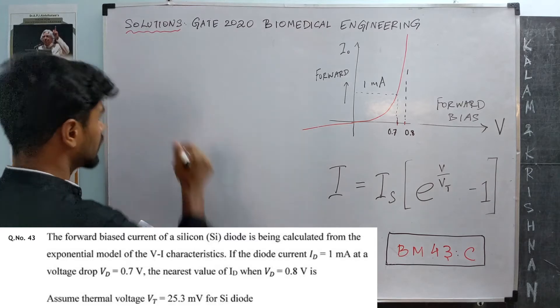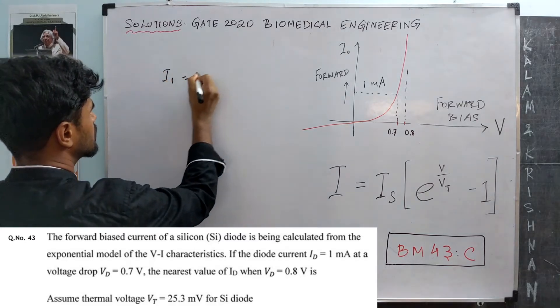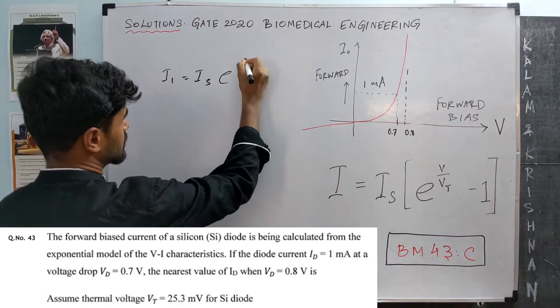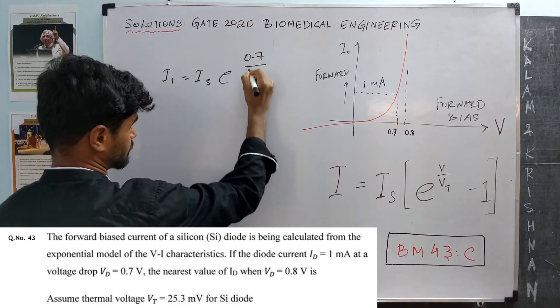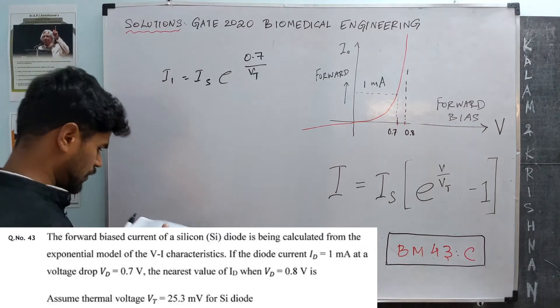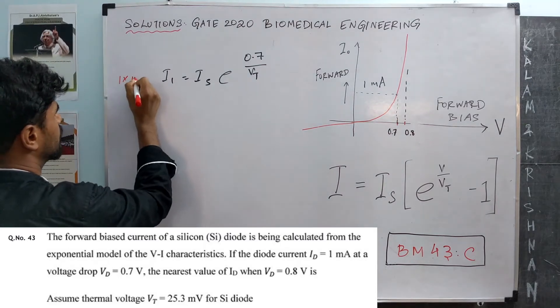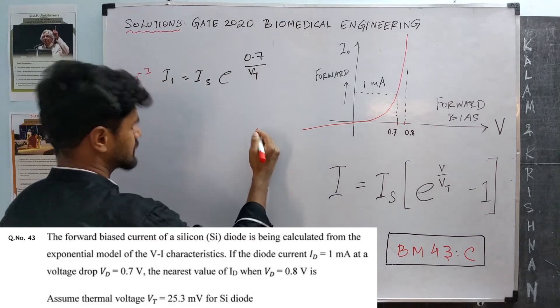So we have I1 is Is times e power 0.7 by VT, and we have I1 as 1 milliamp, so 1 into 10 power minus 3.